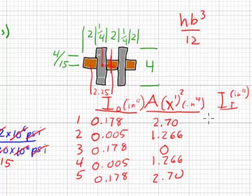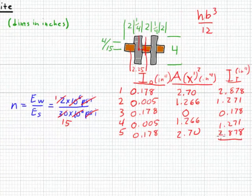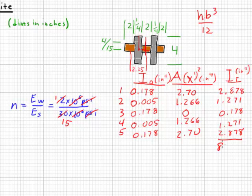So the total contribution from element 1 is 2.878 inches to the fourth. Element 2 is 1.271 inches to the fourth. Element 3 is 0.178. And as we add it all up, we get 8.476 inches to the fourth. And that's with a little bit of round off error, but that won't matter.